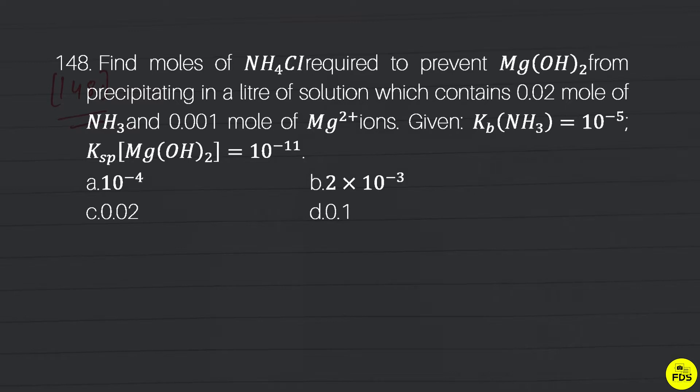Find moles of NH4Cl required to prevent Mg(OH)2 from precipitating in a liter of solution which contains 0.02 mole of NH3 and 0.001 mole of Mg2+ ions.